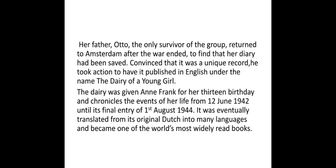Her father Otto was the only survivor of the group. He returned to Amsterdam after the war and found that her diary had been saved. Convinced that it was a unique record, he took action to have it published in English under the name 'The Diary of a Young Girl.' Among Anne Frank's family, her father was the sole survivor who came out of the concentration camp alive. When he found the diary, he was convinced it was unique and decided to publish it so the world would know what they had to go through.